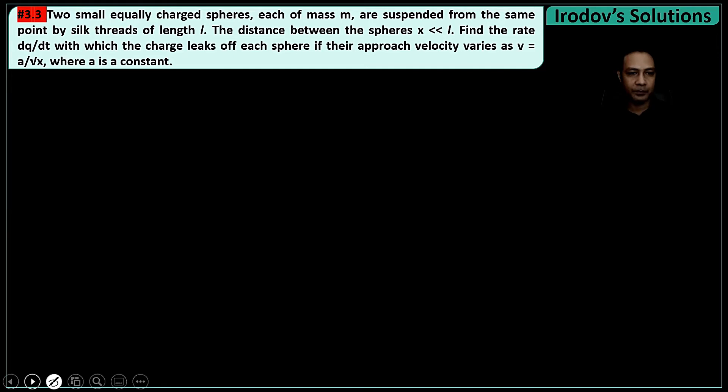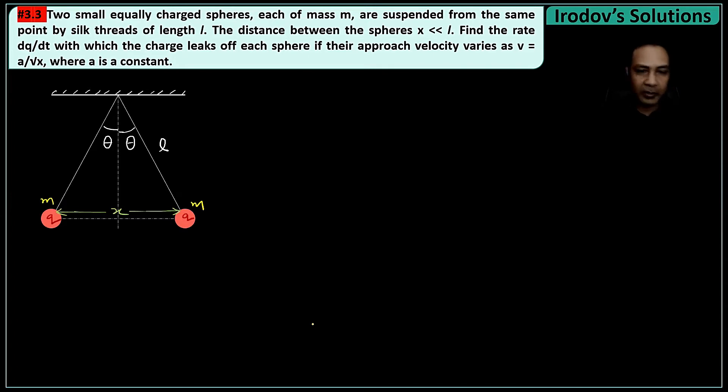So let me draw the diagram of this question. This is the given diagram. These two are the silk threads suspended from a fixed support and these are the two charges, each of charge q and mass m.